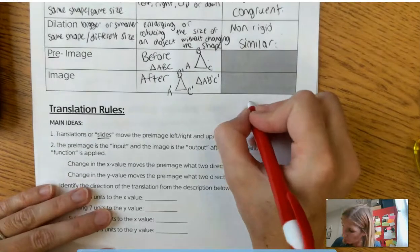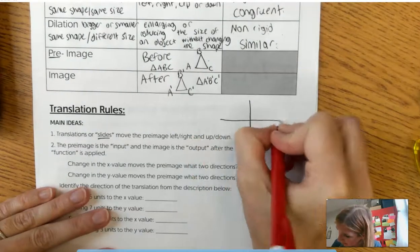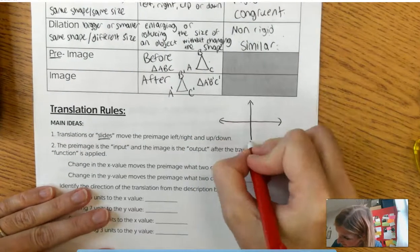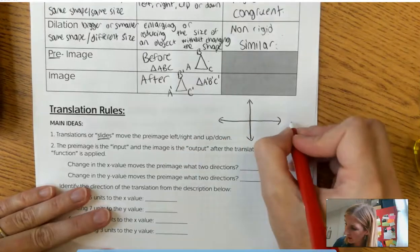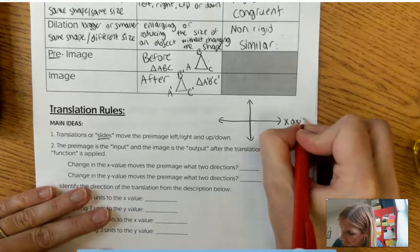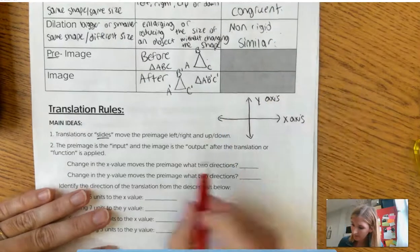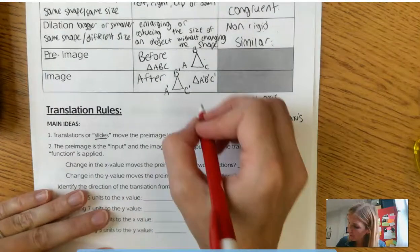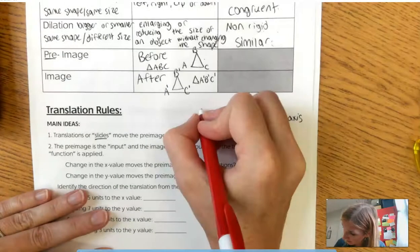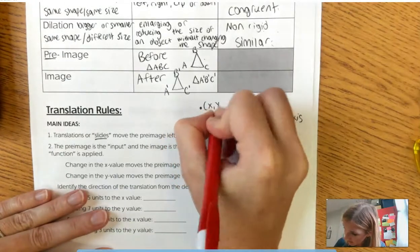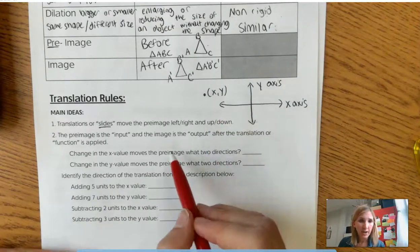Alright. So let's think about this. I'll do a brief review of the coordinate plane for those who forgot it all. This horizontal line right here is the x-axis. This vertical line is the y-axis. So an ordered pair, a point on the plane, is (x, y).